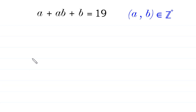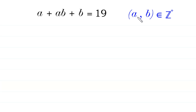Hello, welcome to how to solve this equation for a and b. a plus ab plus b is equal to 19, and we need to find all possible values of a and b, where a and b are positive integers.